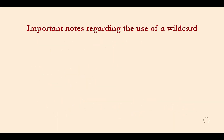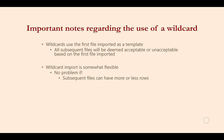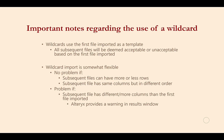Similar to the relative file path, I want to make a couple of important notes regarding the use of a wildcard. Wildcards use the first file imported as the template by which all subsequent files are deemed acceptable or unacceptable. The wildcard import configuration is somewhat flexible — it does not have a problem if subsequent files have more or fewer rows, or if the columns are in a slightly different order. However, there will be a problem if a subsequent file has more columns than the original, or if the column names are not identical. The data in these additional columns can be lost upon import, but Alteryx makes this easy to spot because you will get a warning in your results window.